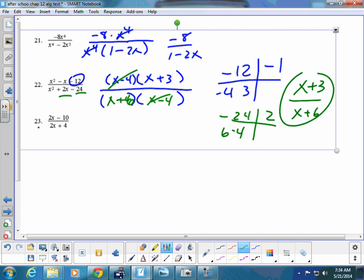This one here, number 23, pull a 2 out, X minus 5. Pull a 2 out, X plus 2. These cancel. And I have X minus 5 over X plus 2.